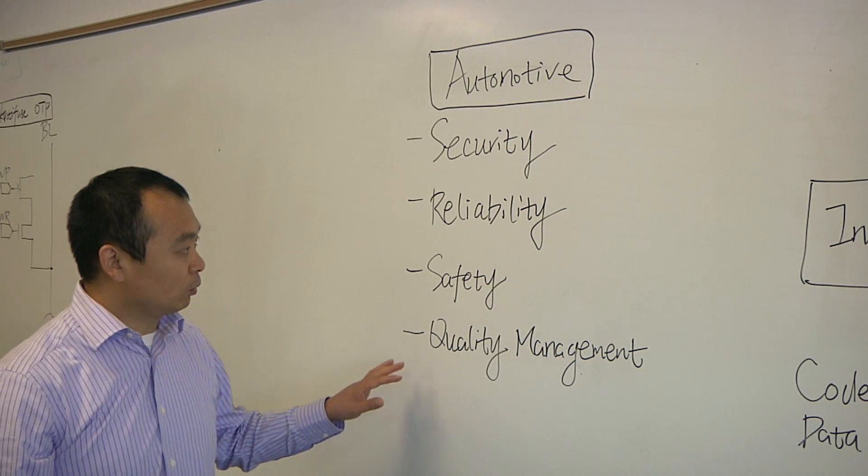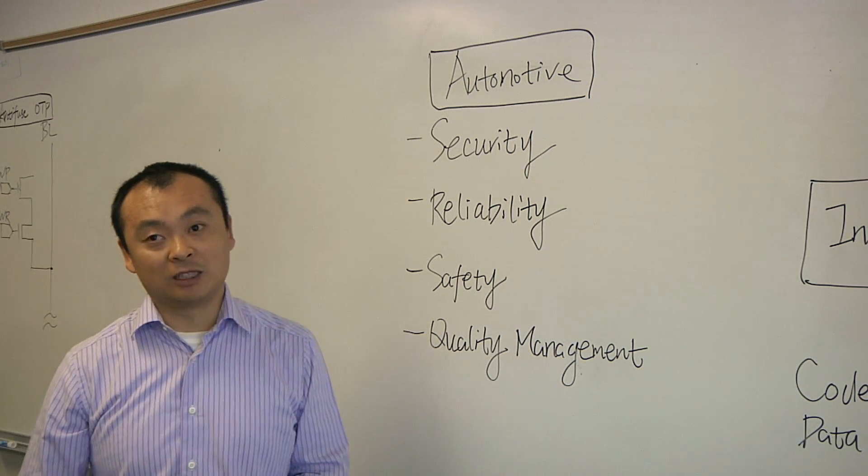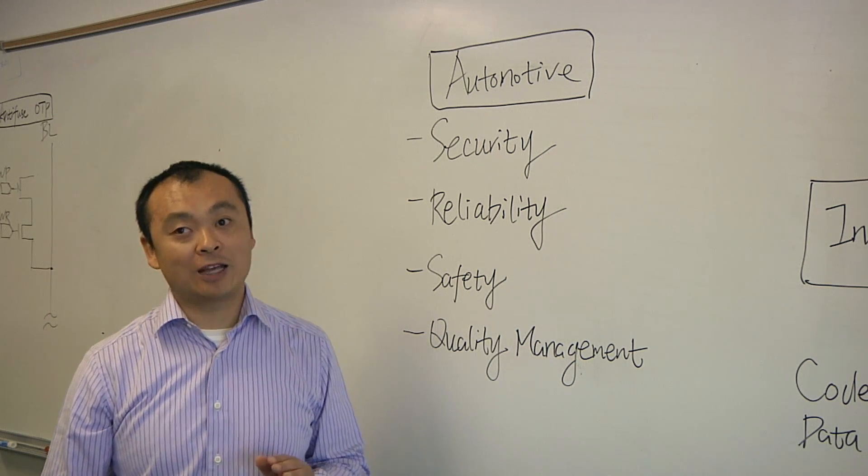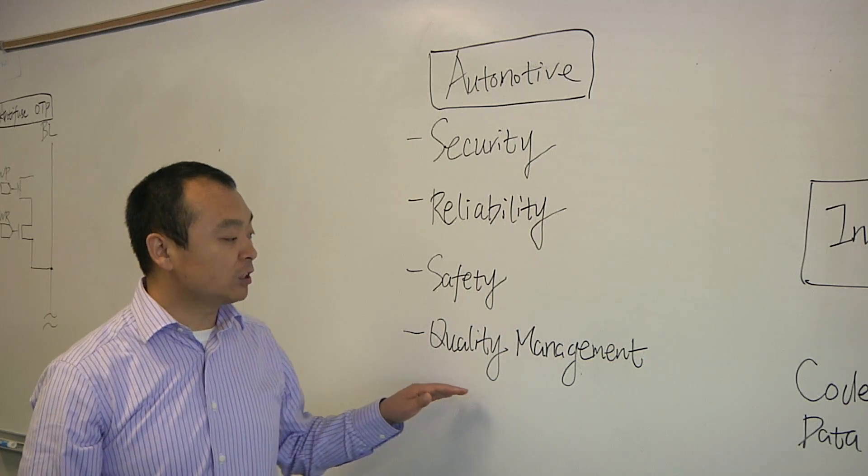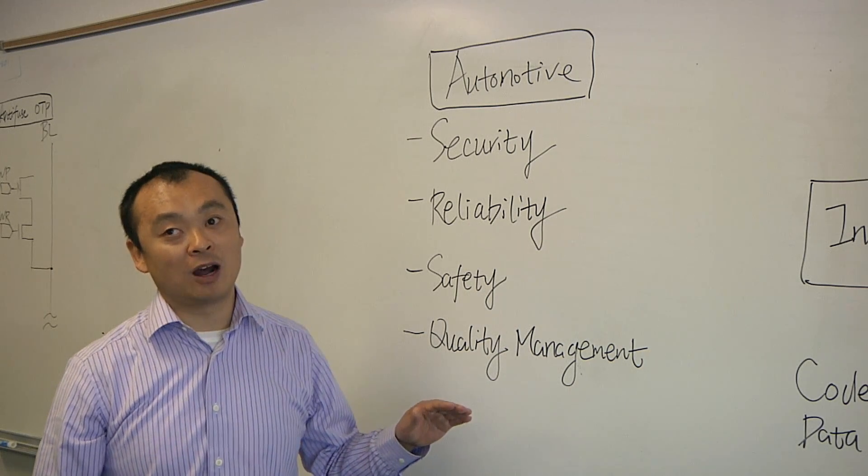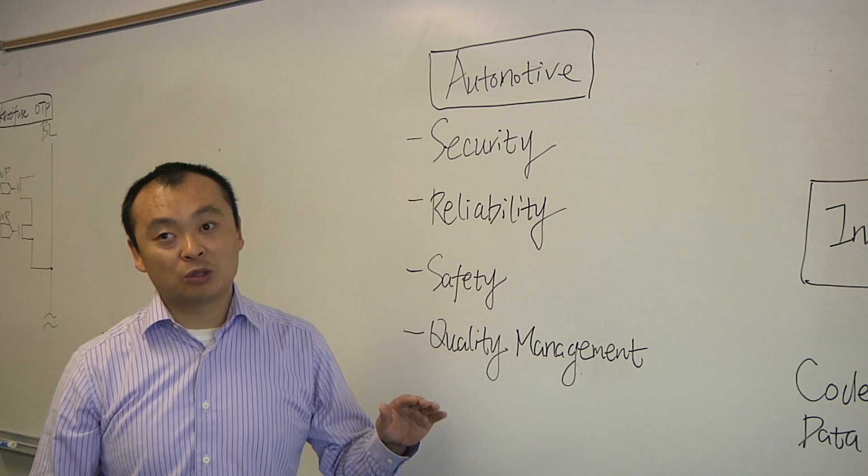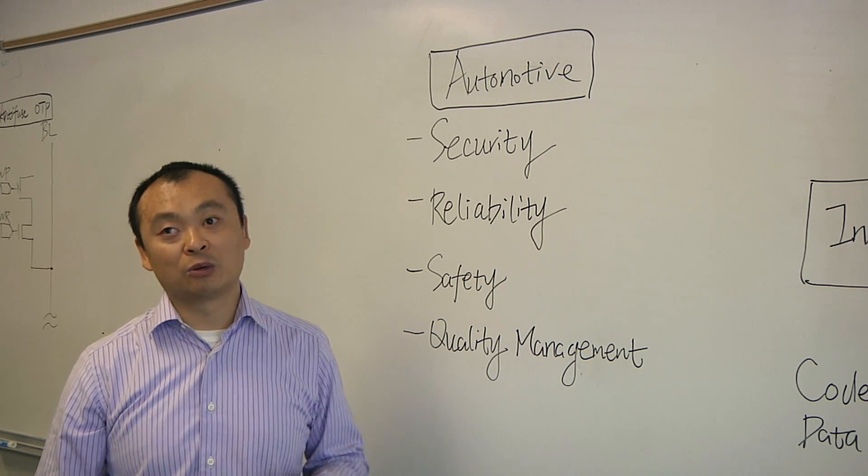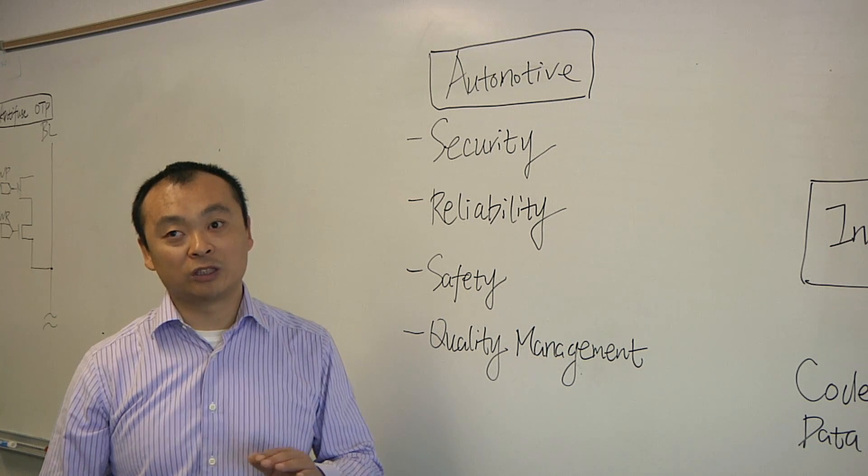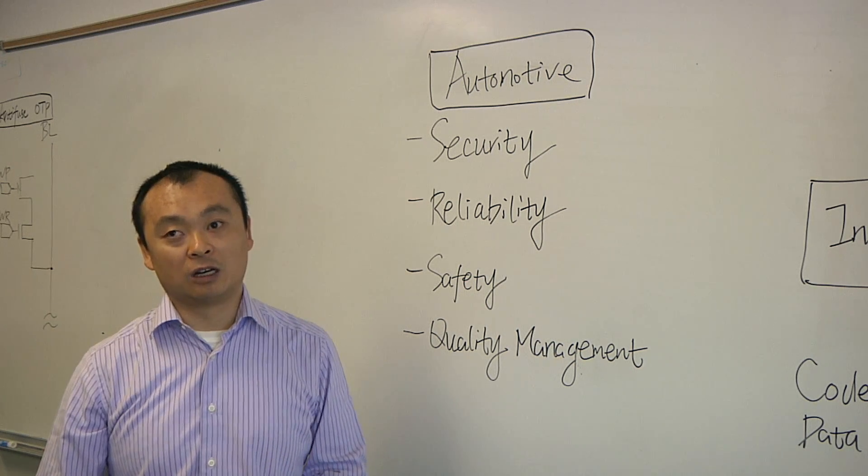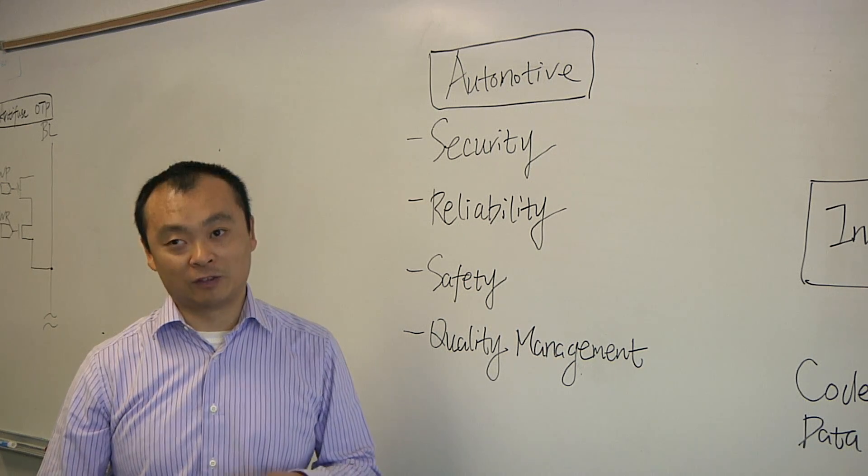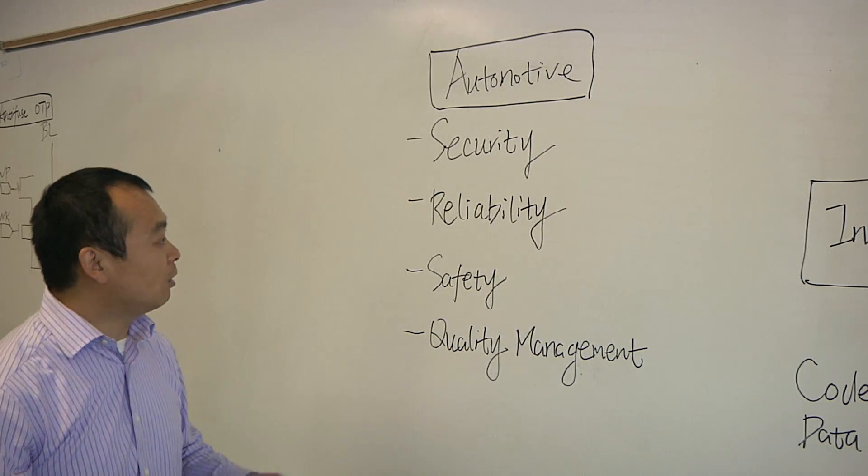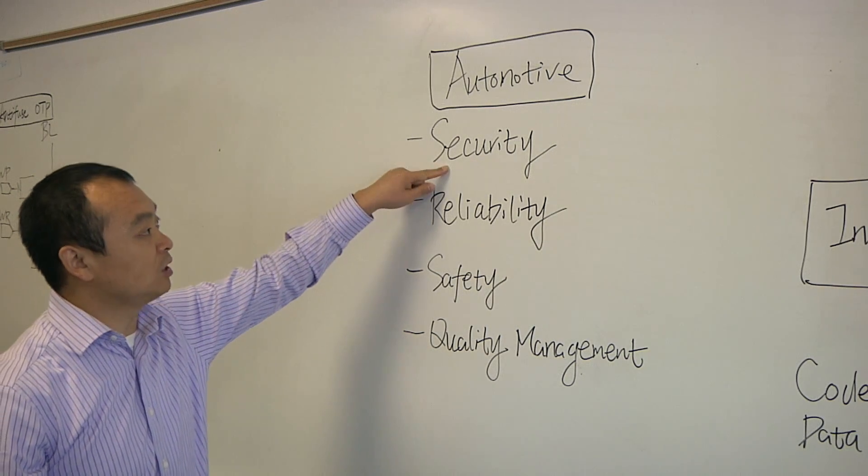And then also, for the automotive product development, we need to follow the ISO standard on the quality management of all our engineering processes. That includes the product development flow and also all the engineering resource management and the quality assurance during the standard operation of the company. So on top of that, we need to provide the security.